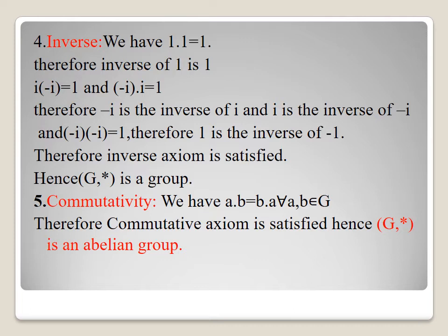We can also check the commutative property: a·b = b·a for all a, b in G. Therefore, the commutative axiom is also satisfied. Hence, (G, *) is an abelian group.